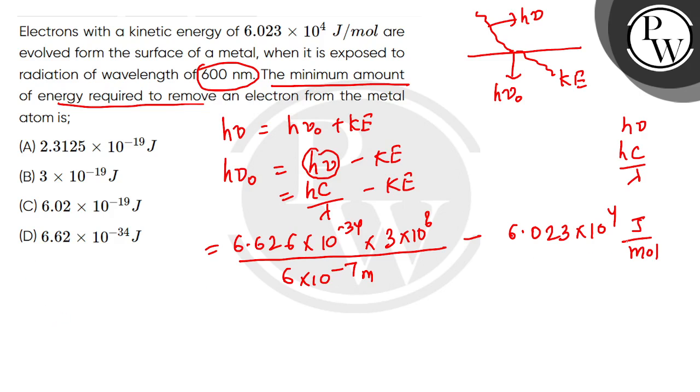One mole equals 6.023 × 10^23 particles. This is joules per mole, so per mole will cancel. This will cancel, and we get 10^-19. We do 4 minus 23, so it becomes 10^-19. This is the kinetic energy per atom.